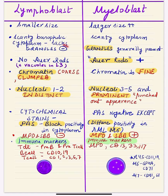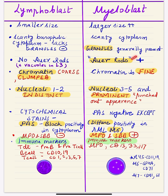The lymphoblast cytoplasm is agranular — it lacks any granules. This is an important difference. In the myeloblast, the cytoplasm is also scanty but more than the lymphoblast, and granules are generally seen. When the myeloblast differentiates, its cytoplasm shows granules, and often needle-like structures called Auer rods are seen, formed by the combination of many azurophilic granules. Auer rods are a very important differentiating point between lymphoblast and myeloblast.